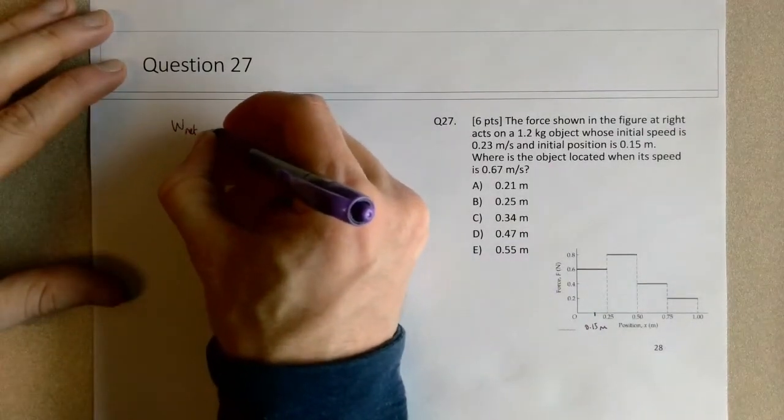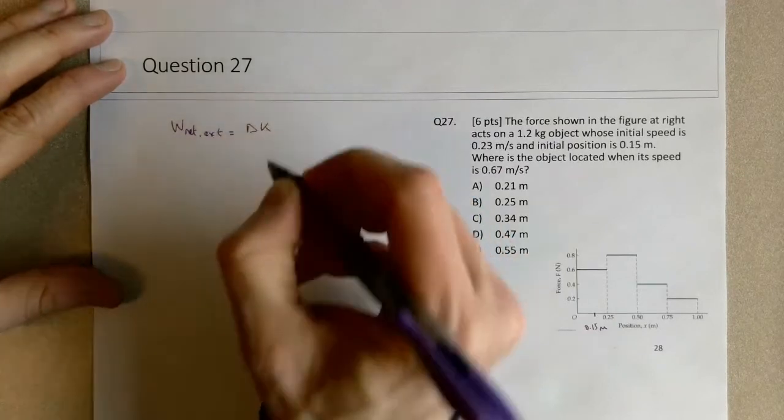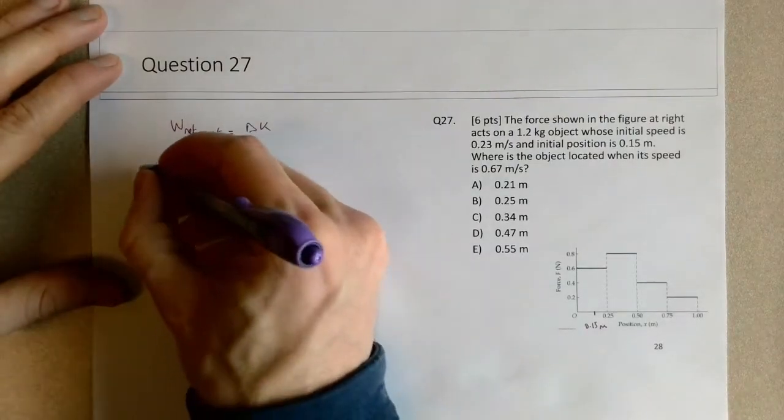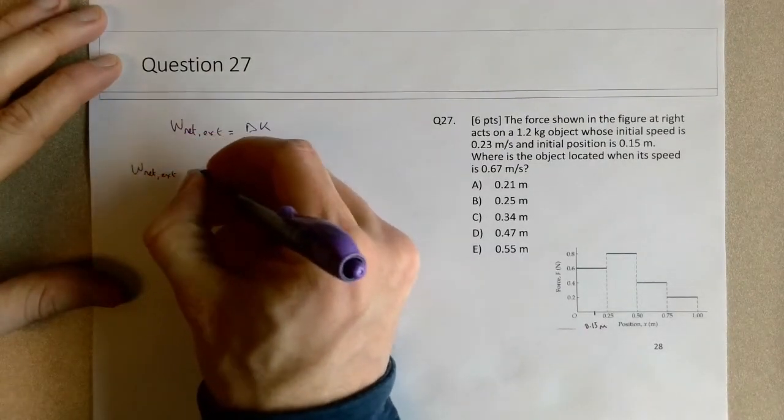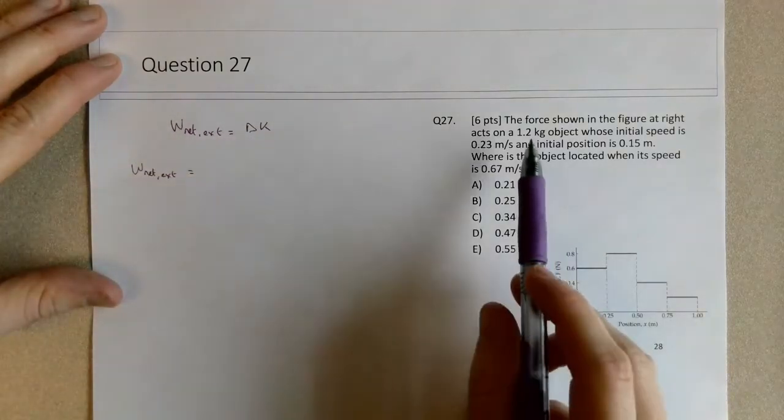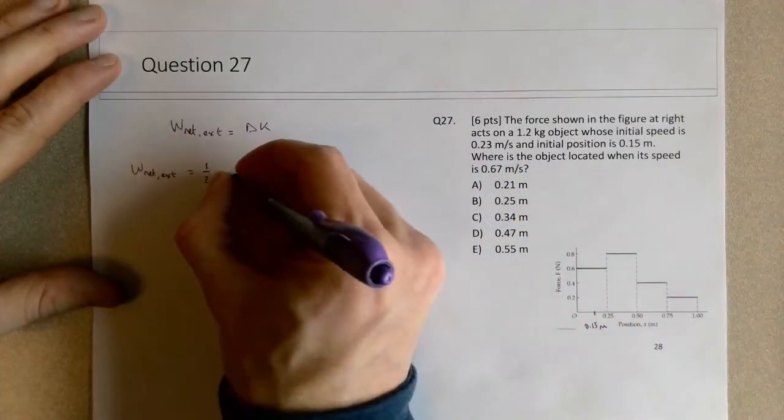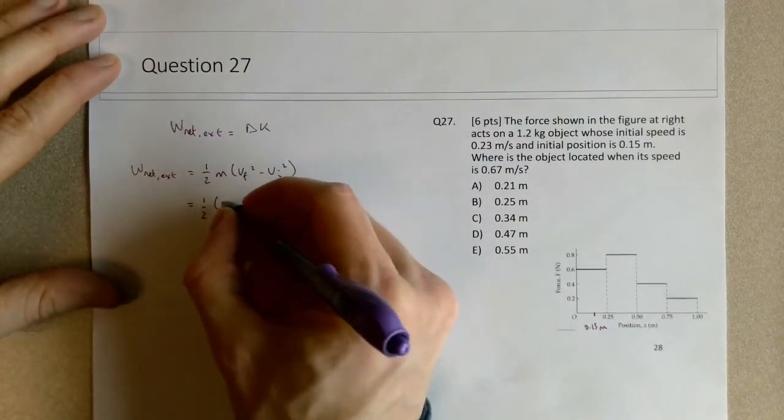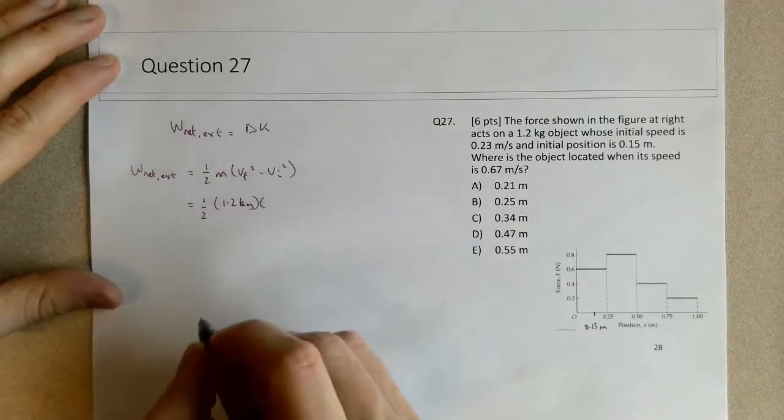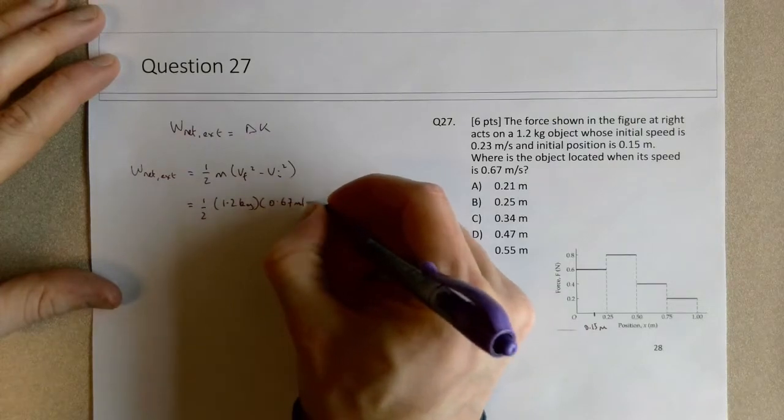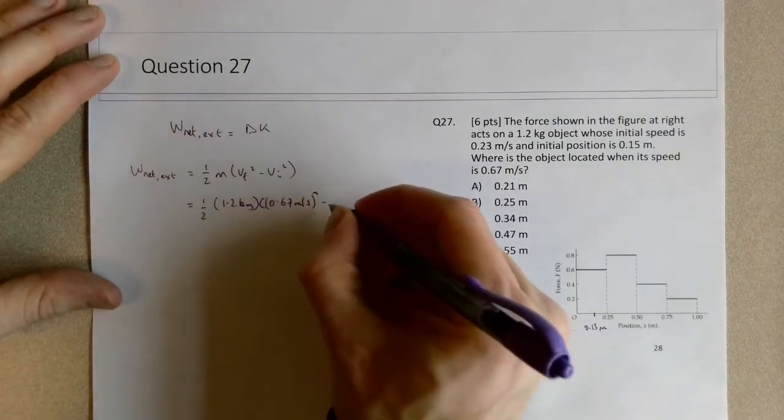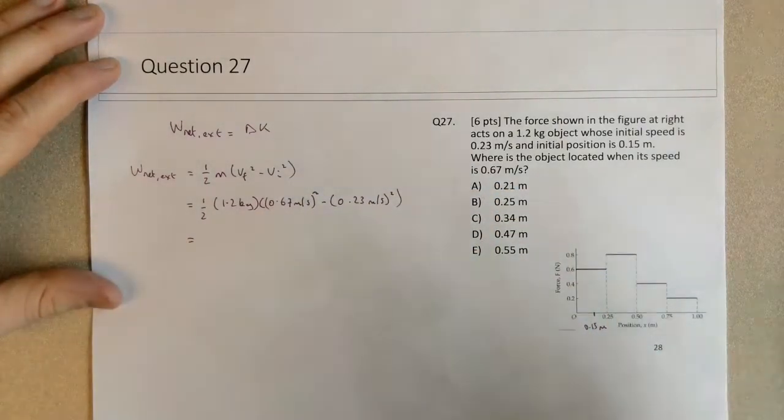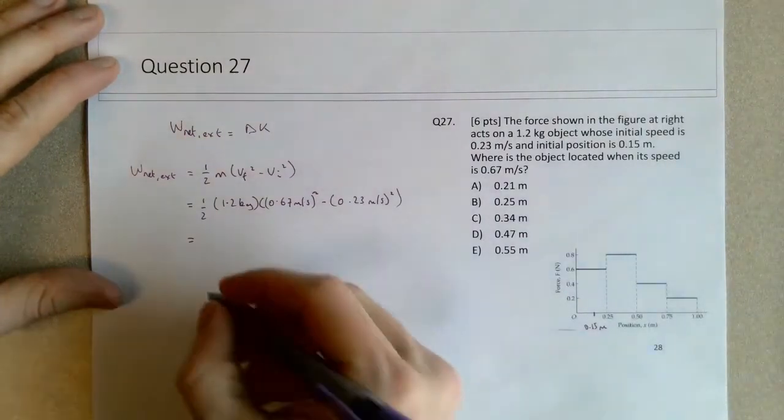With the net external work, it's going to equal delta K in this example. We can figure out the change in kinetic energy given that we have the mass and the two speeds. This is one-half of the mass, which is 1.2 kg, times the final speed of 0.67 m/s squared minus 0.23 m/s squared, and this gives an answer of 0.24 joules.